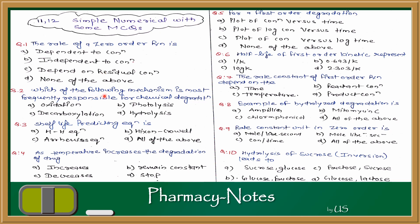Question 2 is: which of the following mechanisms is most frequently responsible for chemical degradation? Options are: oxidation, photolysis, hydrolysis, and decarboxylation. Photolysis, oxidation, and decarboxylation are from the container or environmental system — light, oxidation, or carbon dioxide. While hydrolysis is a particular acid-base reaction; if water is present in the system, hydrolysis can occur. So the answer is C: hydrolysis.